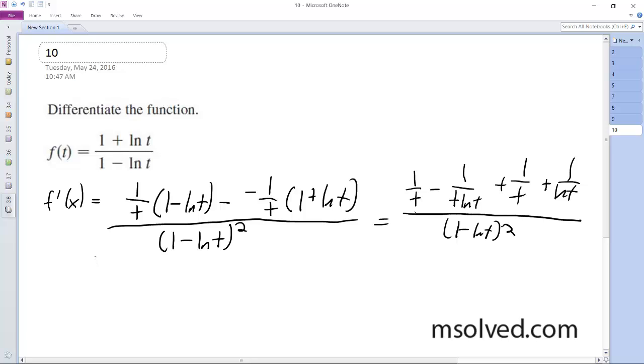Okay, so on top, this becomes, these cancel out, and I get 2 over t on top over 1 minus ln t squared, and this becomes, you can simplify this further by just doing 2 over t times 1 minus ln t squared. That's it.